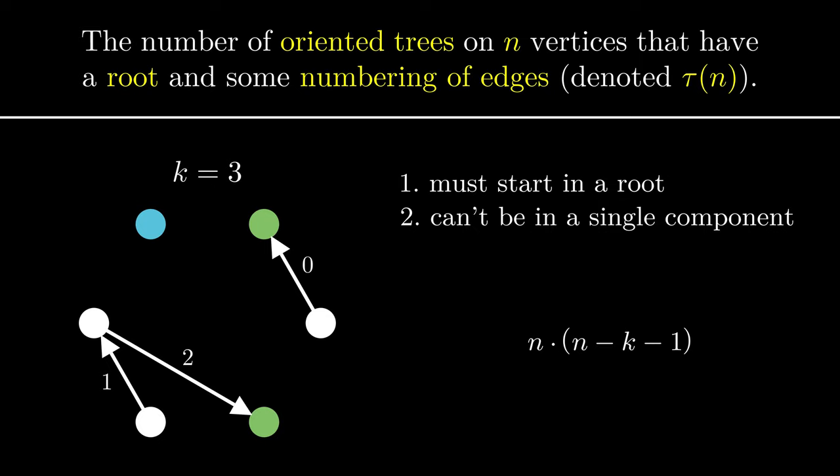Here, we can take the n out, becoming n to the n-1. As for the product itself, notice that it's just (n-1) times (n-2) all the way down to 1, which equals (n-1) factorial.